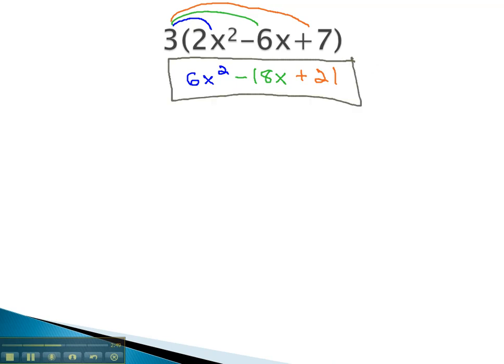We can't combine these terms together because they are not like terms. x squared is different from x, which is even different than having no variables. This becomes our solution.